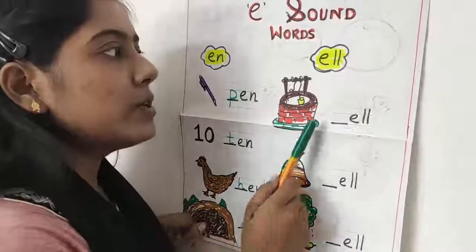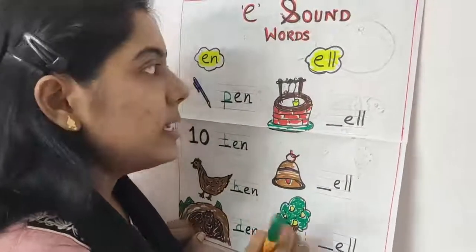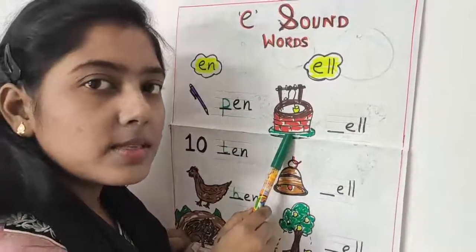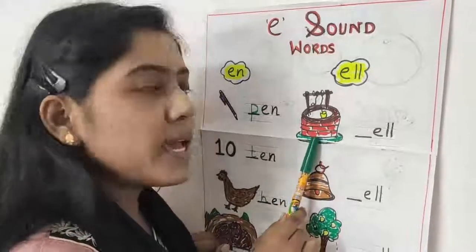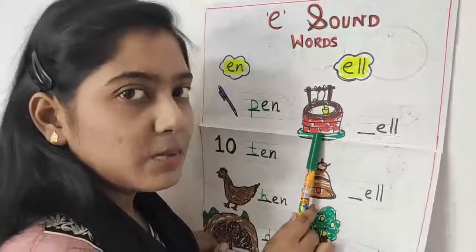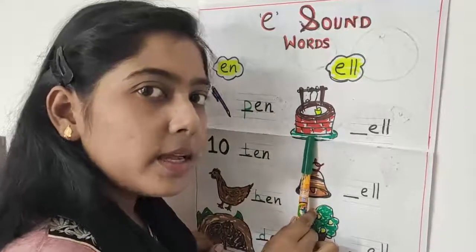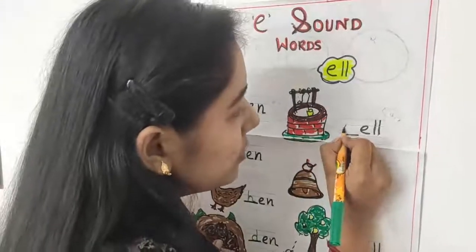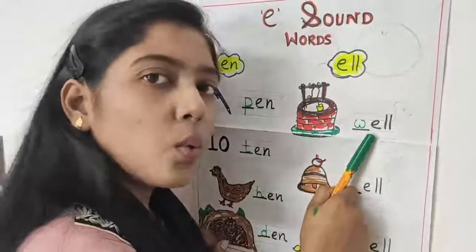Our next sound is L sound — E-double-L. Now see this picture. What is this? It is a well — a place where we draw water. Water is inside this well. W for well. Everyone say W for well. W-E-double-L — well.